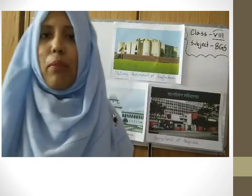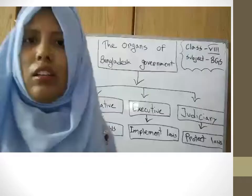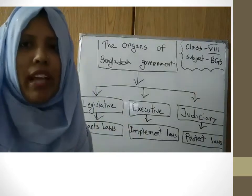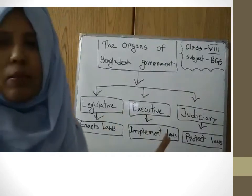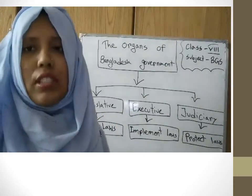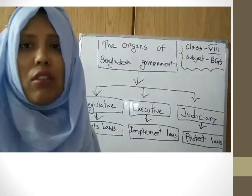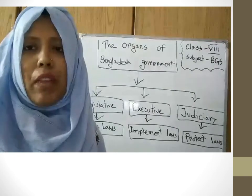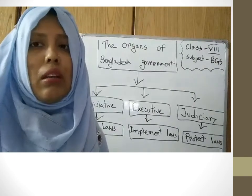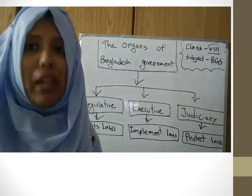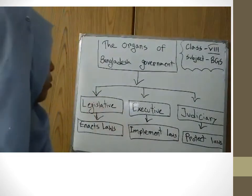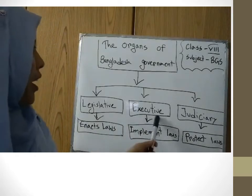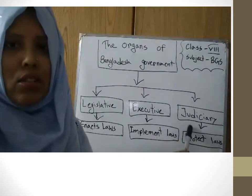The organs of Bangladesh government. Like every government, Bangladesh government also has three organs. In our previous class we already knew about the definition of government, parliamentary types of government, and republican government. We know that Bangladesh has a parliamentary system of government. And it has three organs: the first is Legislative, the second is Executive, and the third is Judiciary.